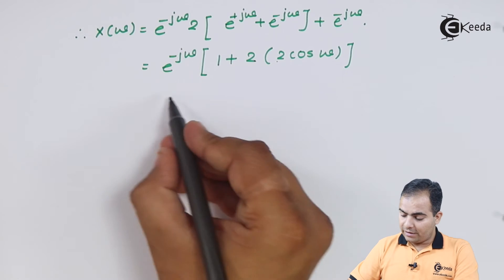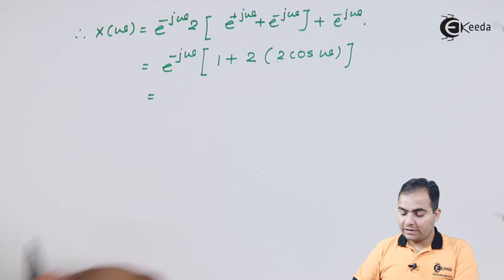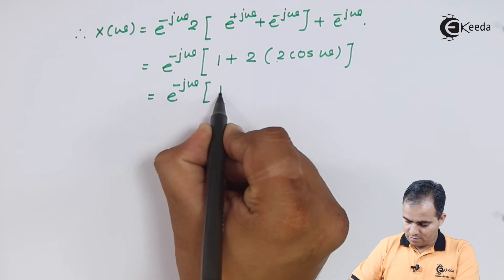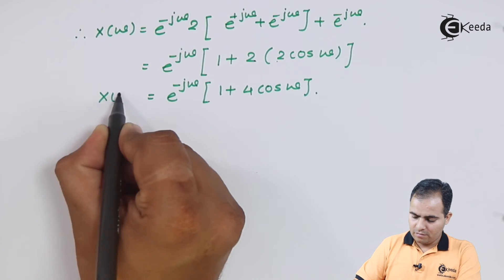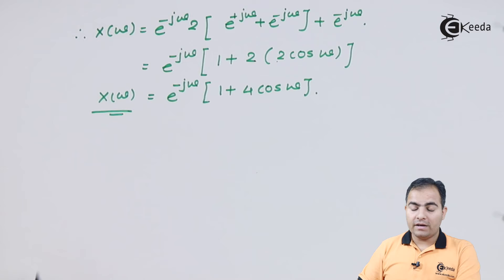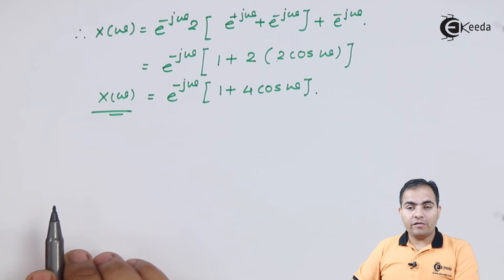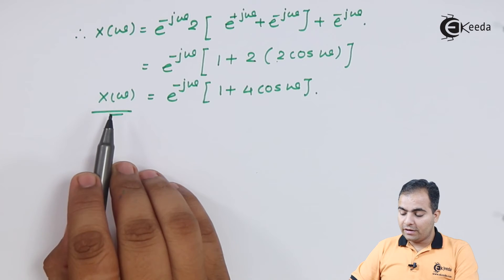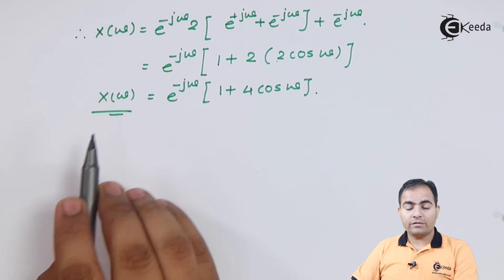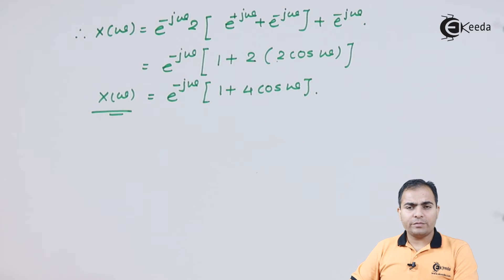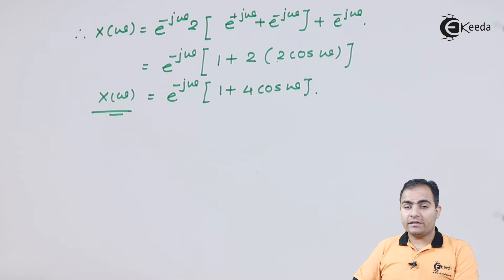Multiplying the terms inside the bracket gives us the final expression — this is the value of the DTFT, i.e., x[n] has been transformed into its discrete time Fourier transform. Now the next part of the question asks us to calculate the magnitude response for omega equals 0 and omega equals pi by 2.